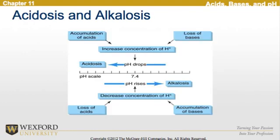This diagram looks more closely at acidosis and alkalosis, where an accumulation of acids increases the concentration of hydrogen ions, or the loss of an acid or accumulation of a base decreases the concentration of hydrogen ions, leading to alkalosis.